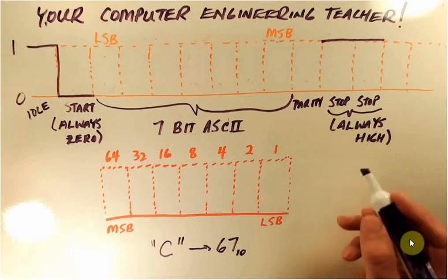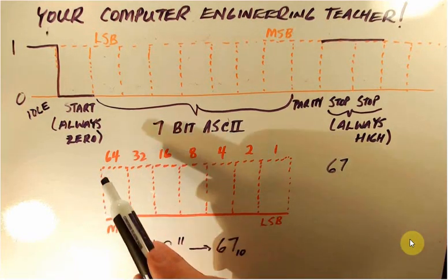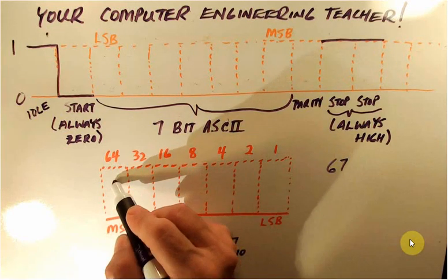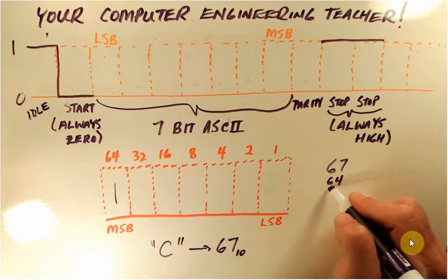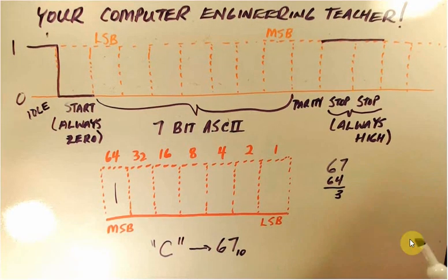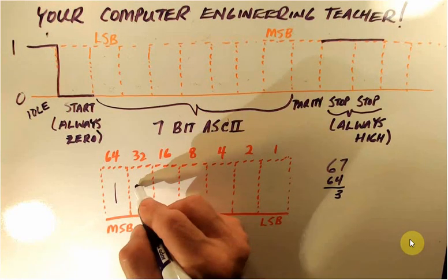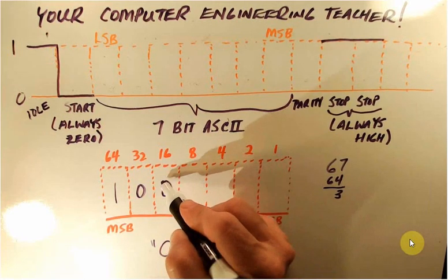If you remember how we do this, we start with the number we want to convert, which is 67, and we say does 64 fit into 67? Yes it does. So we put a one here, we put 64 here, and we subtract. The next thing is we say does 32 fit into 3? No, it doesn't, we put a 0. Does 16 fit into 3? No it doesn't, put a 0. Does 8 fit into 3? Nope. Does 4 fit into 3? No it doesn't.